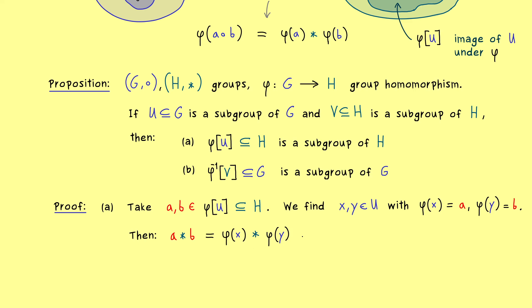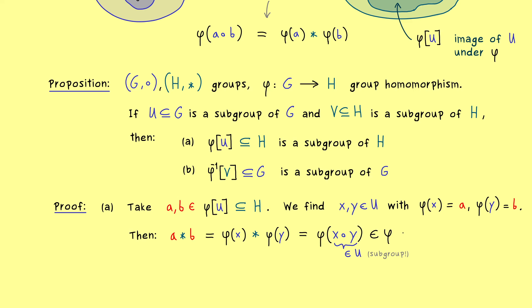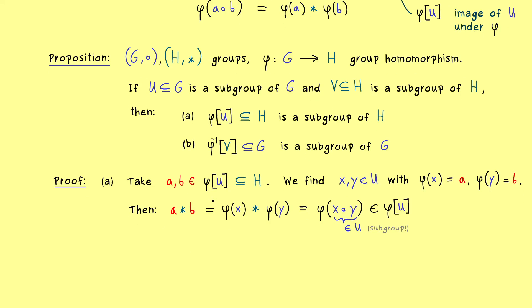At this point we can use the property of a group homomorphism — we can pull in the binary operation — so we get phi(x · y), where now we have the binary operation in G. Moreover, we know that U is a subgroup in G, so x · y lies in U again. Hence phi(x · y) is an element in the image of U. This is exactly what we wanted to show: A · B lies in the image. So we cannot leave this set with the binary operation, which is one of two parts for showing we have a subgroup.